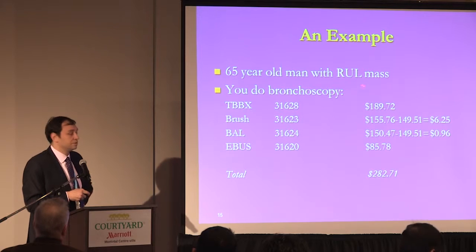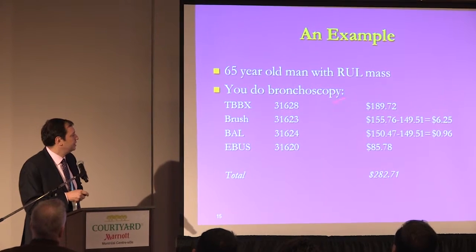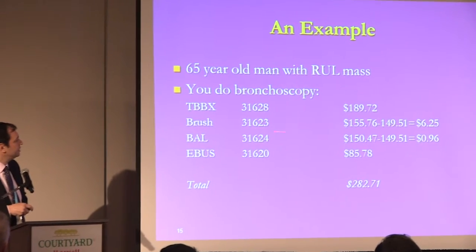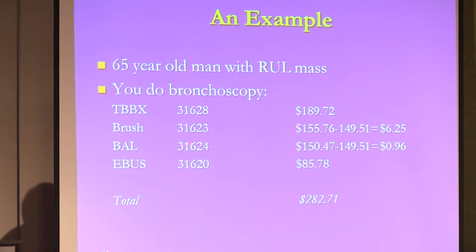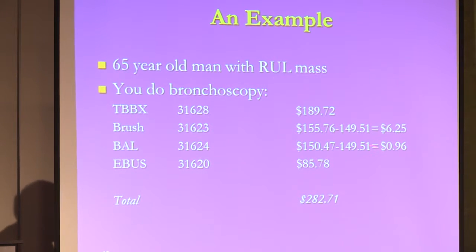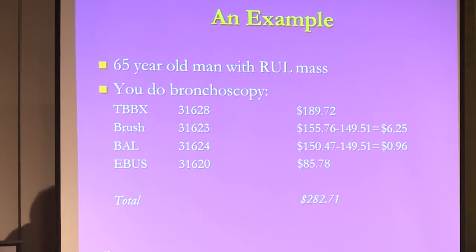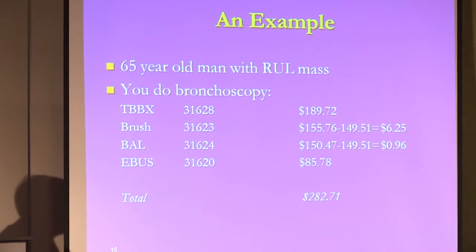Here's an example: a 65-year-old man with a right upper lobe mass. You do a bronchoscopy — transbronchial lung biopsy 31628 at $189, brushing at $155 minus the base gives you $6, BAL ordinarily $150 but here subtracted from the base gives you about $0.96, and EBUS as an add-on is about $70 to $80. So this bronchoscopy totals about $282. You can't get paid fully for each sampling separately, because the procedure assumes you did the airway exam and performed the whole bronchoscopy.